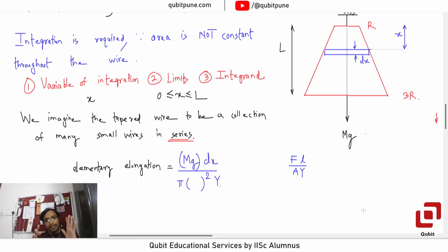So in this elementary elongation we have covered both the integrand and the variable of integration. Variable of integration will come here because we can express the radius using that distance x. Have you got this particular part till now?